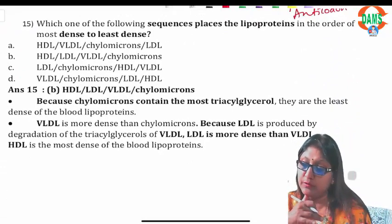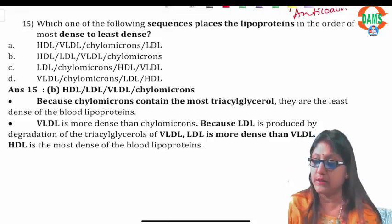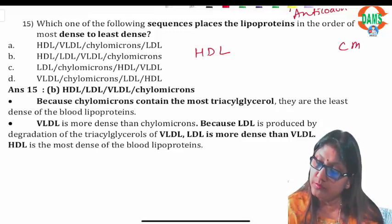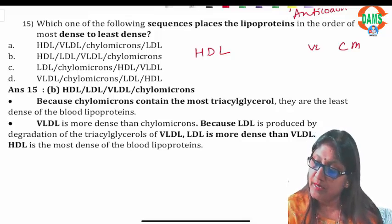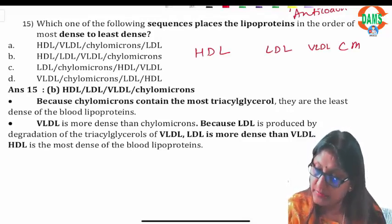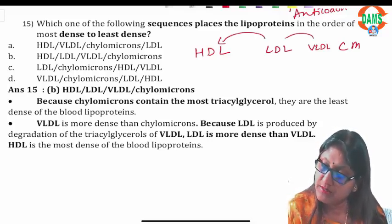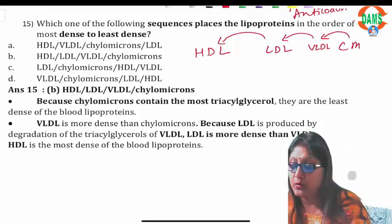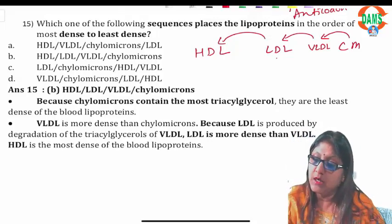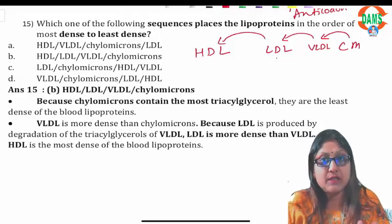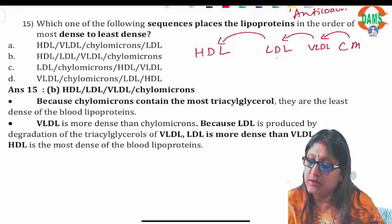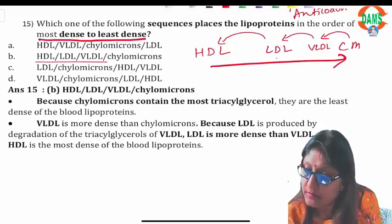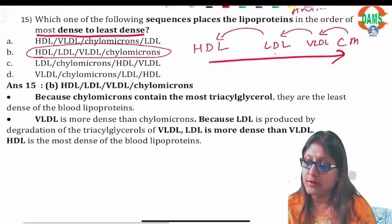Question fifteen: which sequence places lipoproteins in order from most dense to least dense? Most dense is HDL and least dense is chylomicron, with all other lipoproteins falling in between. From most dense to least dense the order is: HDL, LDL, VLDL, chylomicron. The correct option is HDL, LDL, VLDL, chylomicron — option B. Thank you very much and best wishes.